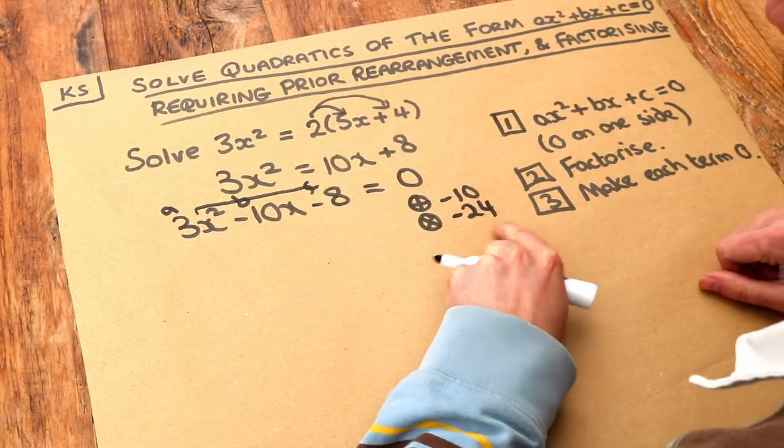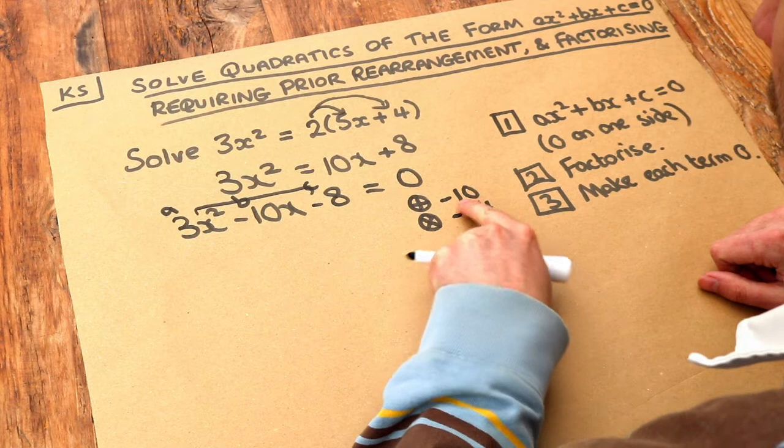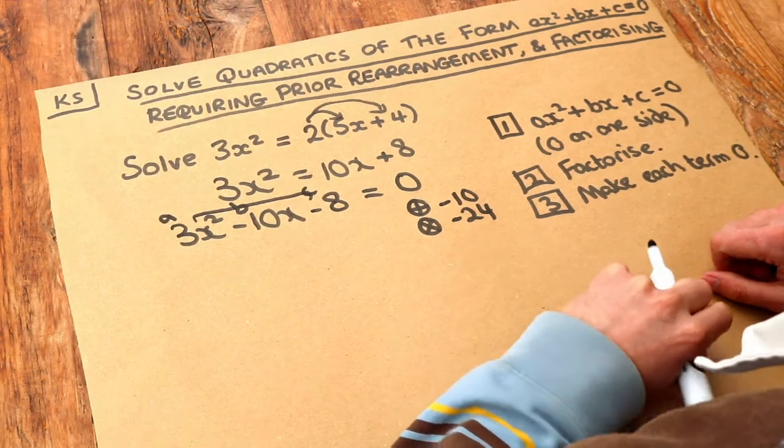And then we split the middle term using these numbers. So what two numbers add to give minus 10 times to give minus 24?